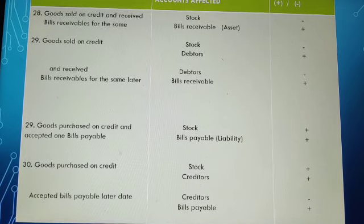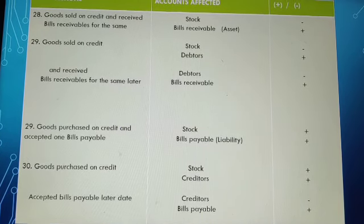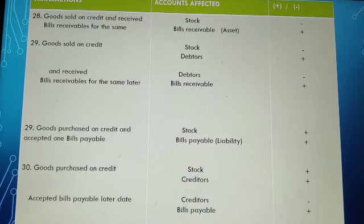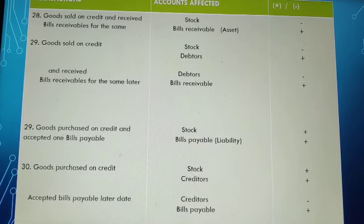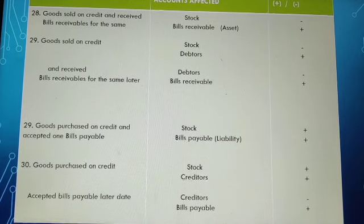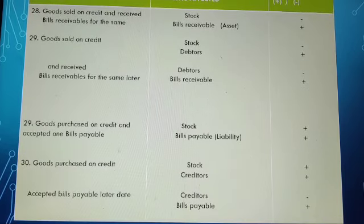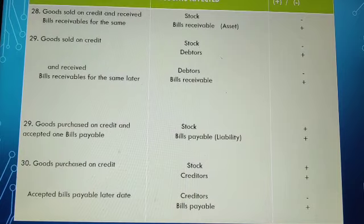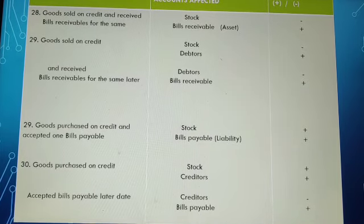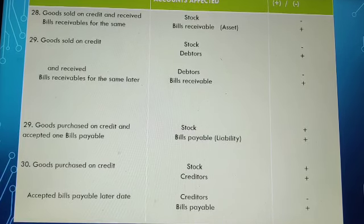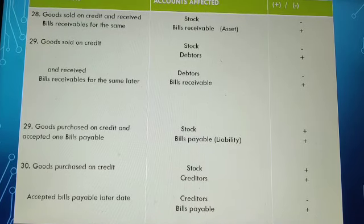If goods are sold on credit only, you record stock as negative and debtors as positive, opening a debtors account. Later, if a transaction mentions you are receiving bills receivable for goods sold on credit, then debtors are reduced by that amount and one more account — bills receivable — is created under your asset section. Debtors become zero and the bills receivable account is created.